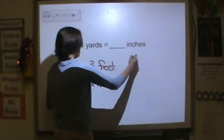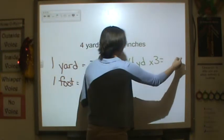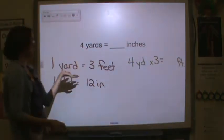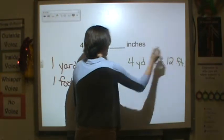So four yards, we multiply that by three, we'll get the feet. It's a multiplication relationship. So four times three is twelve.